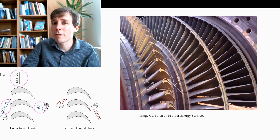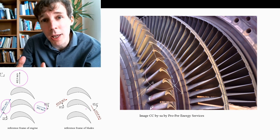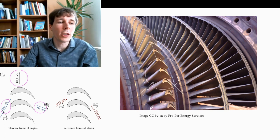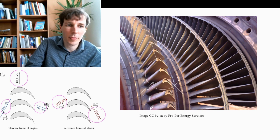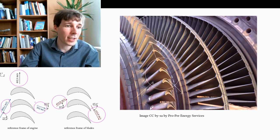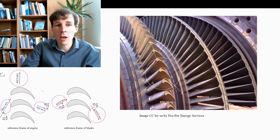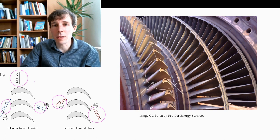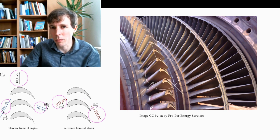You could also adopt a different point of view: jump on the blade and move at 400 meters per second together with it. If you did this, you would see the gas coming in at 400 meters per second and leaving at 600 meters per second. You obtain those vectors by taking the inlet and outlet velocities and subtracting the blade velocity from them. The math is relatively trivial, just a little tedious, so the components are given in this problem to make things easier.